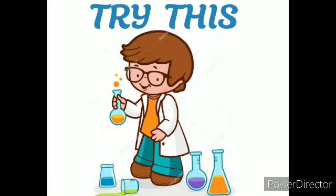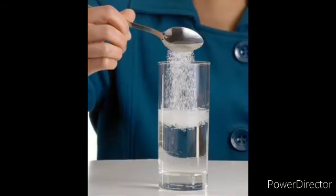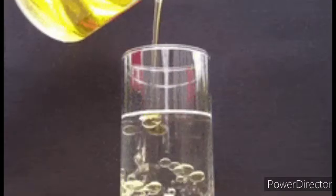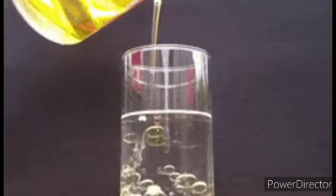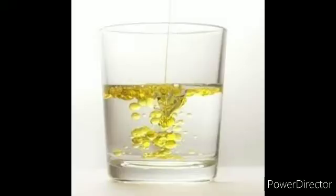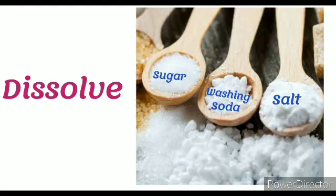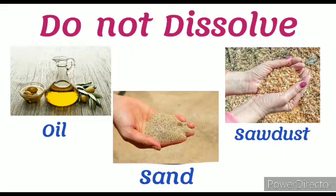Let us try a simple experiment. Take a glass half filled with water. Add a spoonful of sugar to it and stir it. What do you see? The sugar has disappeared in the water, which means it has completely dissolved in the water. Now take another glass half filled with water, add a spoonful of oil to it and stir it. Watch carefully — the oil did not disappear even on stirring, which means it cannot dissolve in water. This experiment tells us that some substances like sugar, salt, and washing soda can dissolve in water, while some substances like oil, sand, and sawdust cannot dissolve in water.